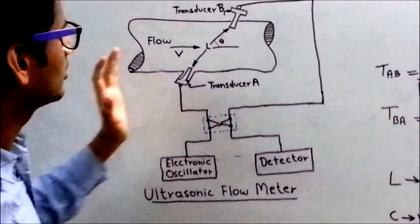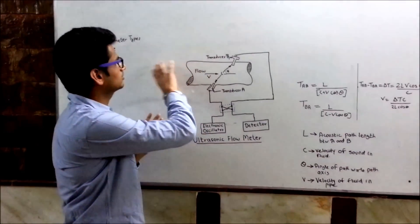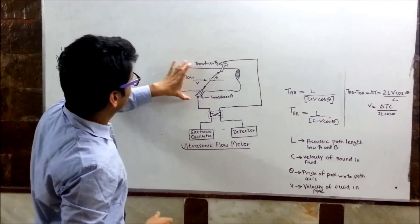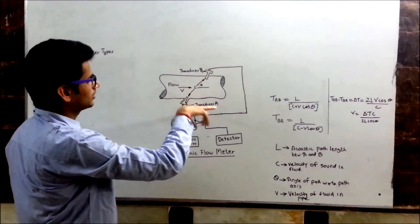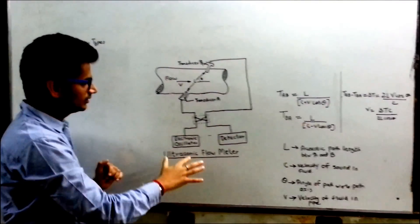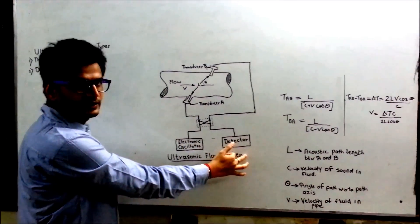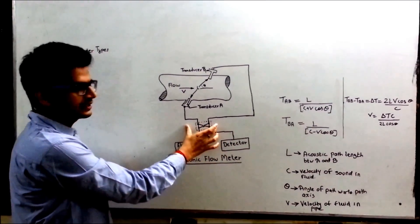Now, I will explain the construction part. As you can see, this construction consists of a pipe, then there are two transducers - transducer A and B. Then there is an electronic oscillator and detector. Both of them are interconnected to each other.